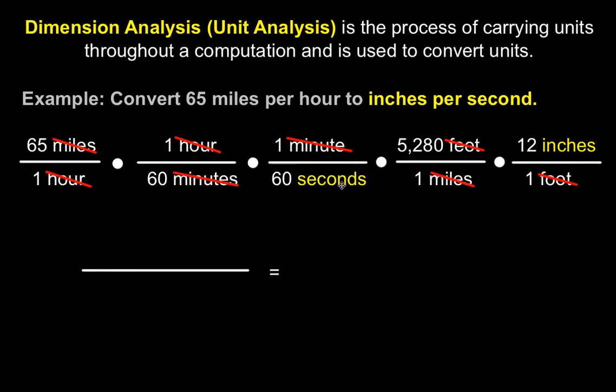So now you have inches left over in the numerator and seconds left over in the denominator. All other labels have been cross-canceled. Simply take all the numbers in your numerator and multiply them together. 65 times 1 times 1 times 5,280 times 12. That will give you 4,118,400 inches. In your denominator, you take 1 times 60 times 60 times 1 times 1. That's basically 60 squared, which is 3,600 seconds.